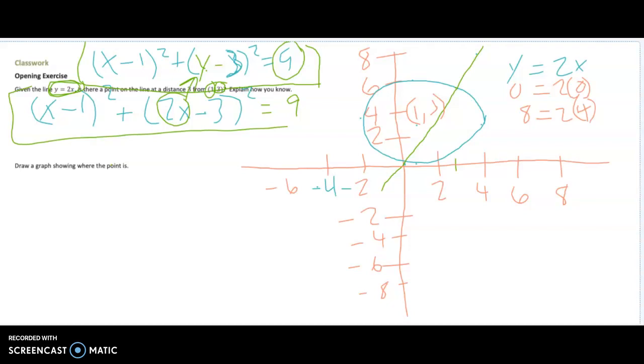Now, if you wanted to know those two points exactly, here would be your equation for the circle. (x minus 1) squared, and then (y minus 3) squared. And then it equals 3 squared because that's the radius and that is 9.